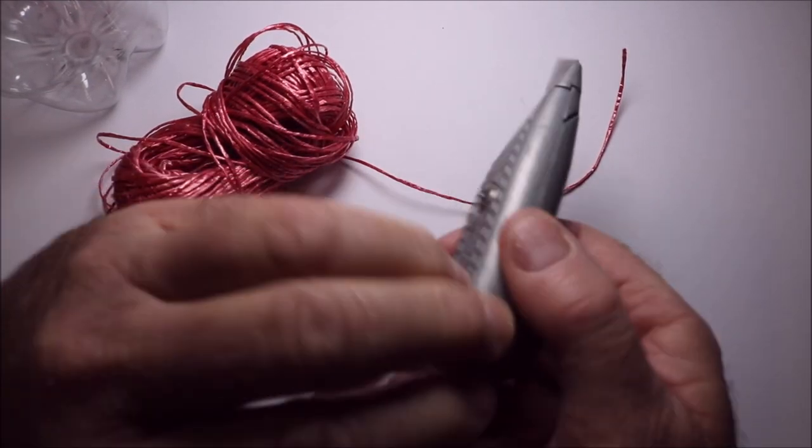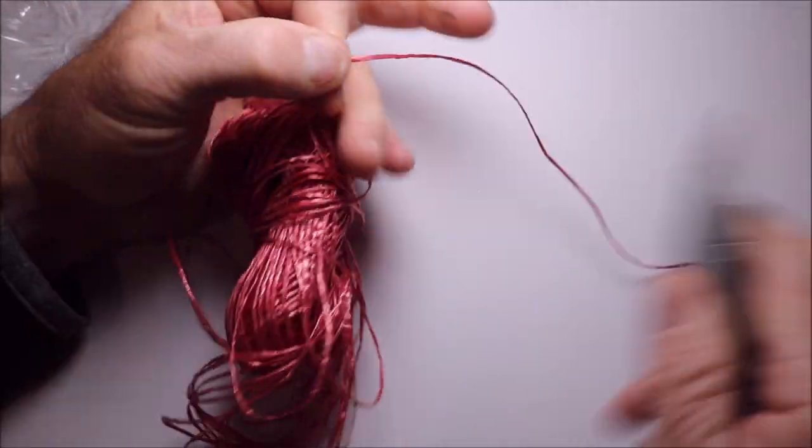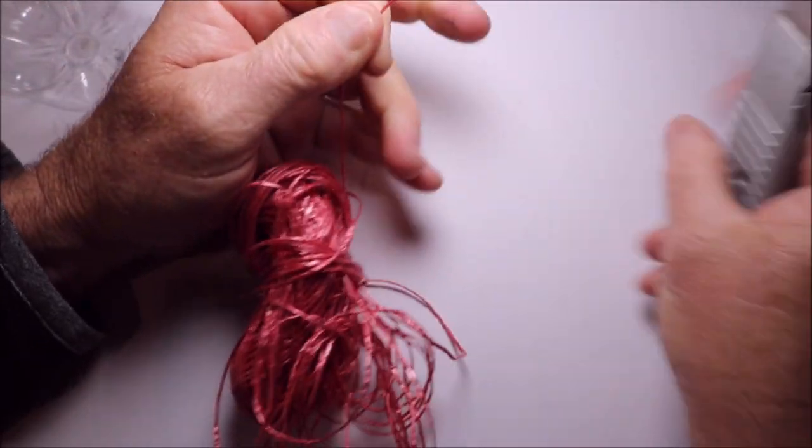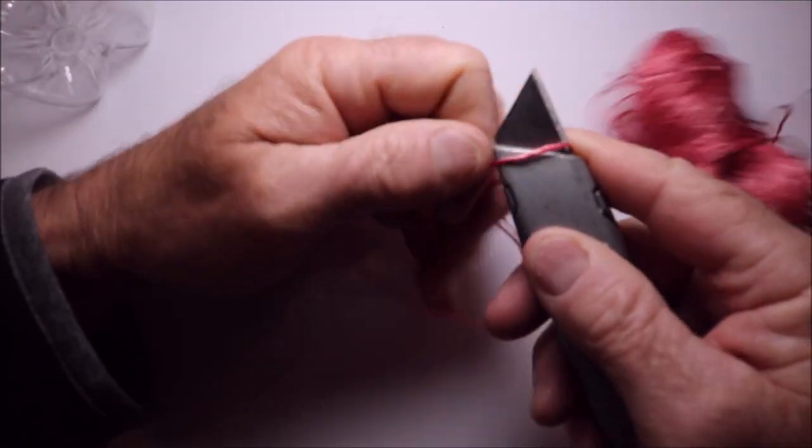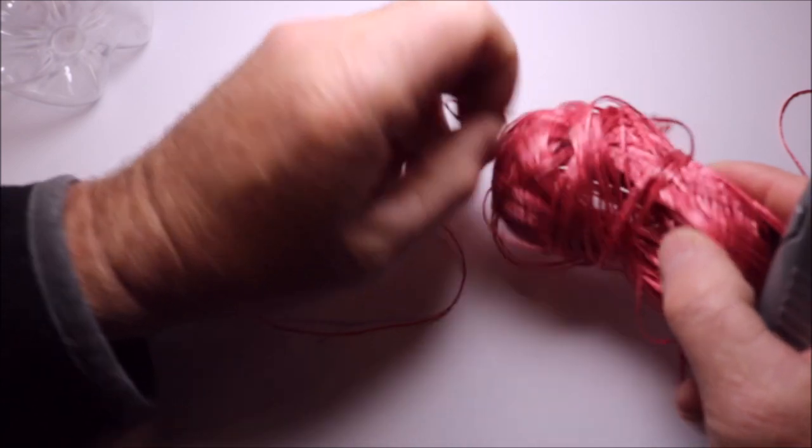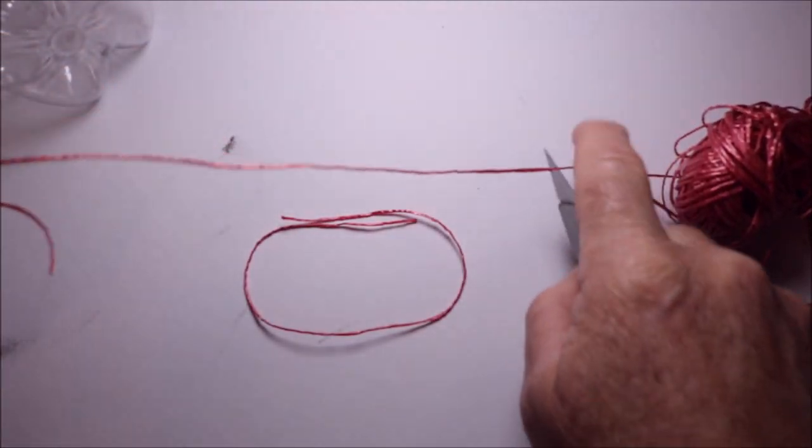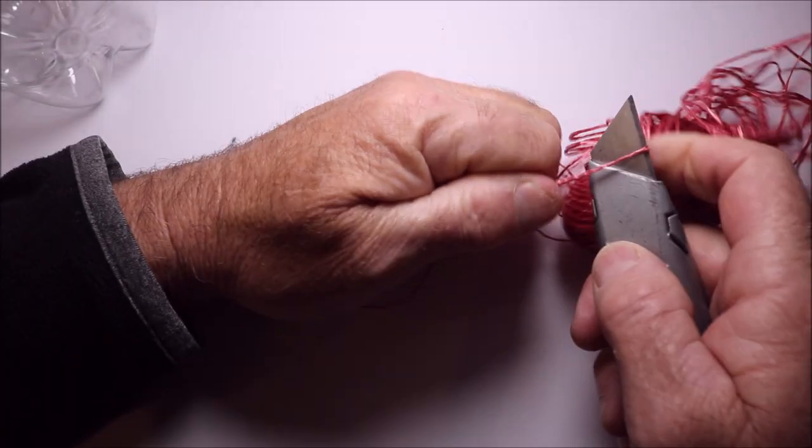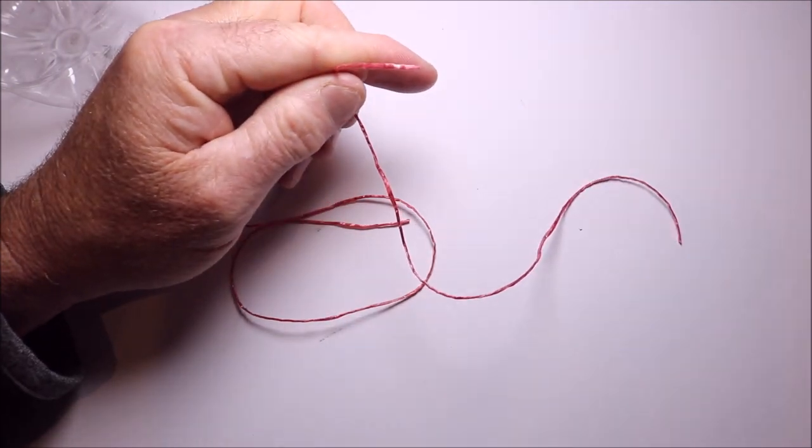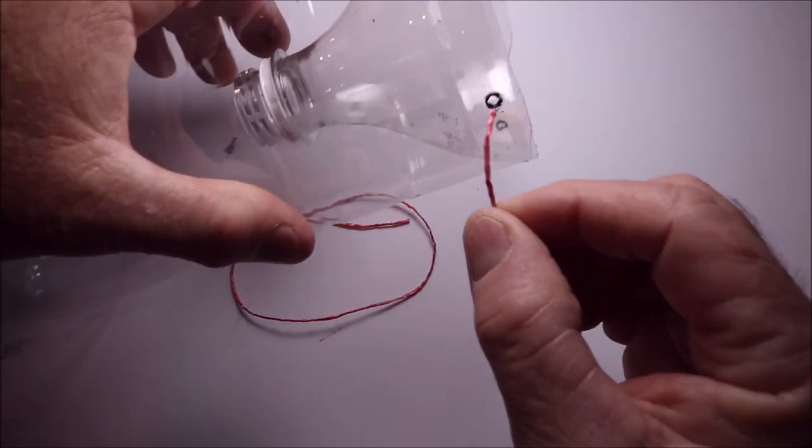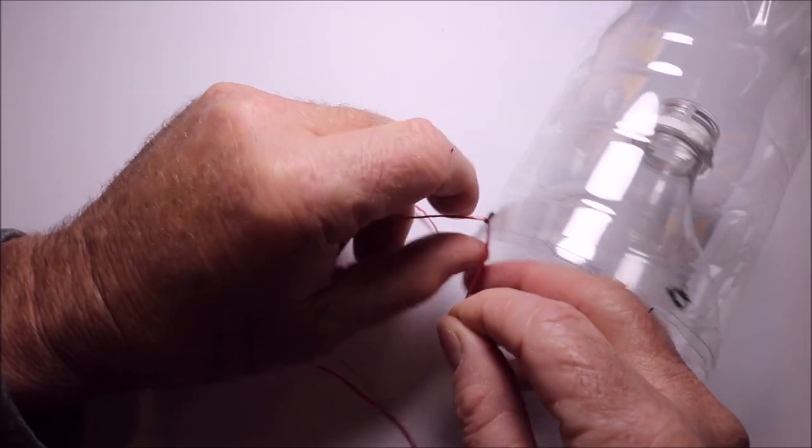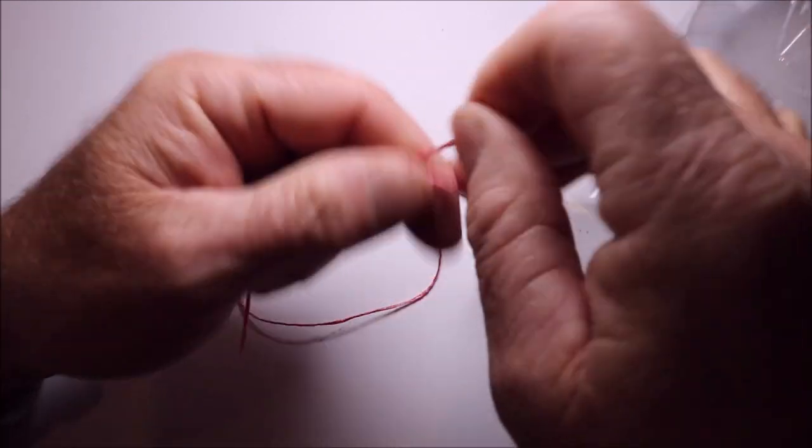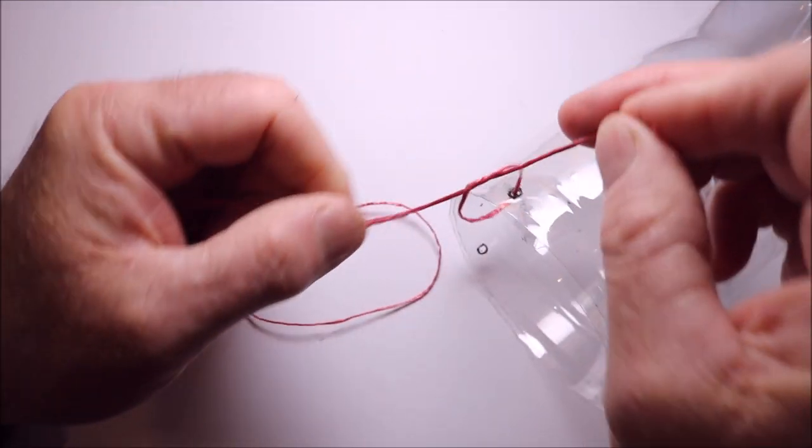Time to bring out our red thread. So, what we need to do is just cut some short pieces. And then what we're going to do is just go through the holes we've created and just tie that in place. Just with a simple granny knot is fine.